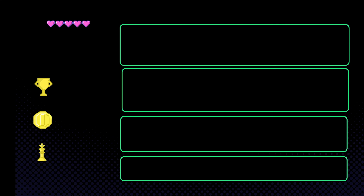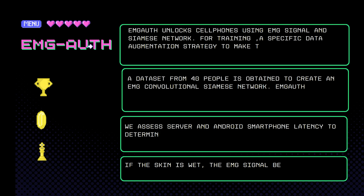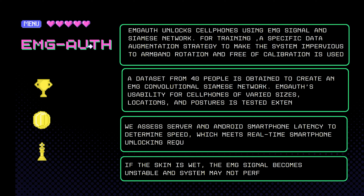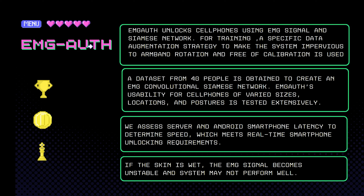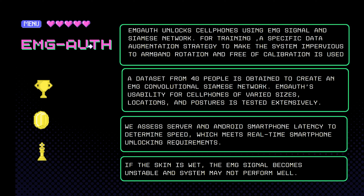Conclusion. EMG Auth unlocks cell phones using EMG signals and a Siamese network. For training, a specific data augmentation strategy was used to make the system impervious to armband rotation. A dataset from 40 people was obtained to create an EMG convolutional Siamese network. EMG Auth usability for cell phones of varied sizes, locations, and postures was tested. Server and Android smartphone latency was assessed to determine speed, which meets real-time smartphone unlocking requirements. However, if the armband scan is slightly off, the EMG signal becomes unstable and the system may not perform well.